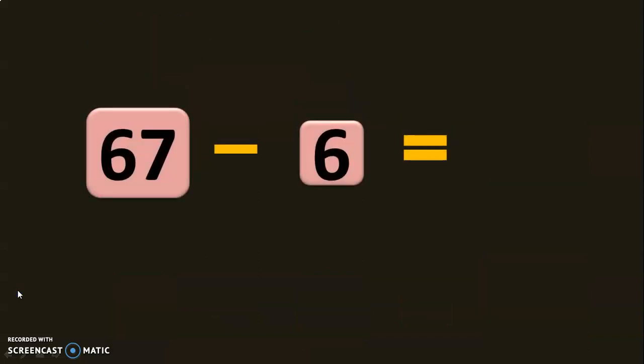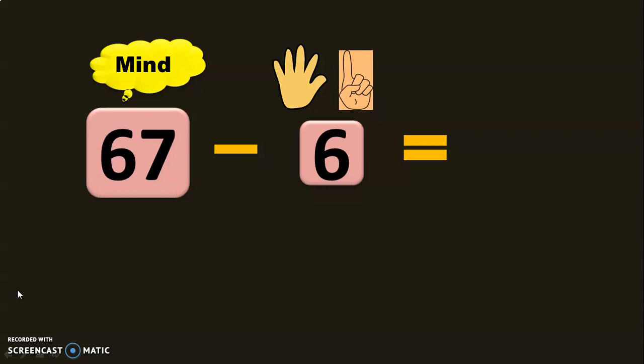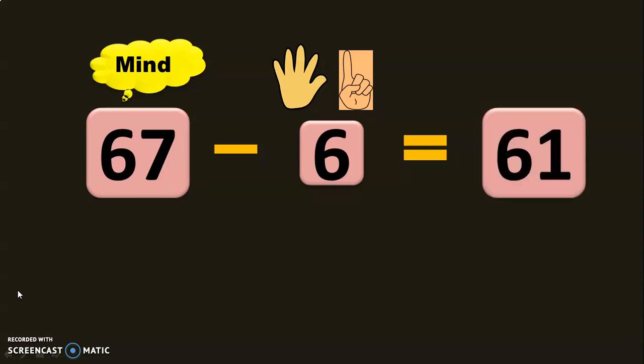Let us do 67 minus 6. 67 in the mind and 6 in the fingers. Before 67: 66, 65, 64, 63, 62, 61. So the answer is 61. It is very important for children to know the forward and backward counting of numbers from 1 to 100 in class 1. I have dealt with before and after numbers in a separate video, the link to which is given in the description box and the iCard section. Here, we are subtracting a single digit number from a double digit number — we subtracted 6 from 67 using backward counting and arrived at the answer 61.